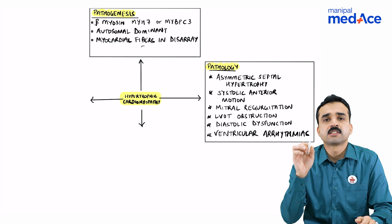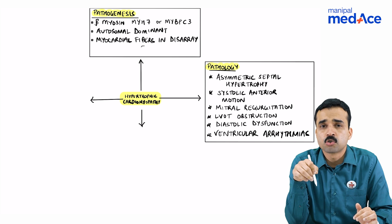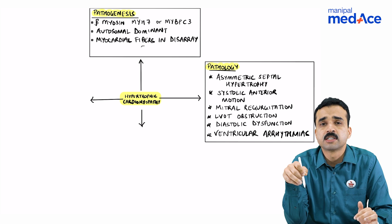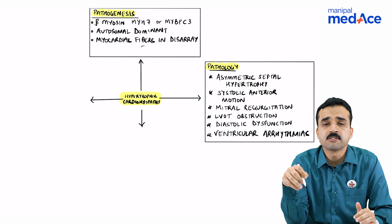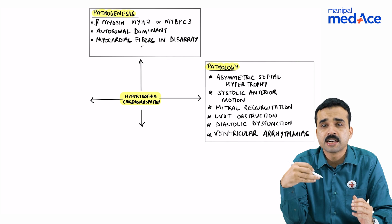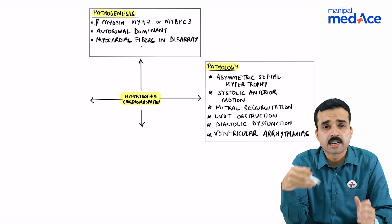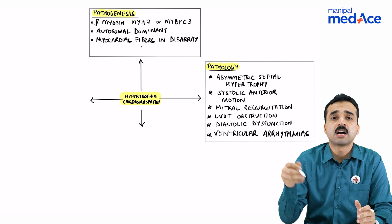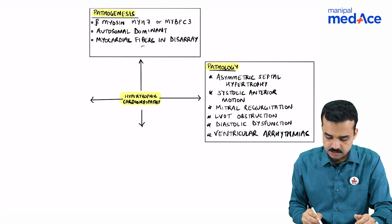Pathology-wise, we will notice that the patients have asymmetric septal hypertrophy along with systolic anterior motion of the mitral valve, leading to mitral regurgitation and a dynamic left ventricular outflow tract obstruction. They will also have diastolic dysfunction of the heart with an increased risk for arrhythmias.